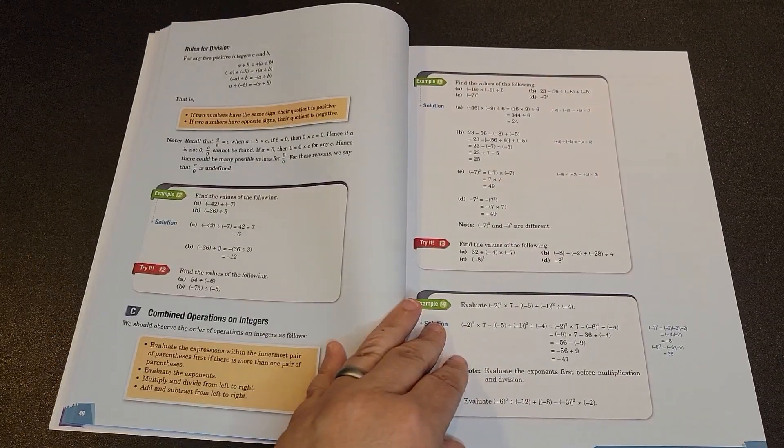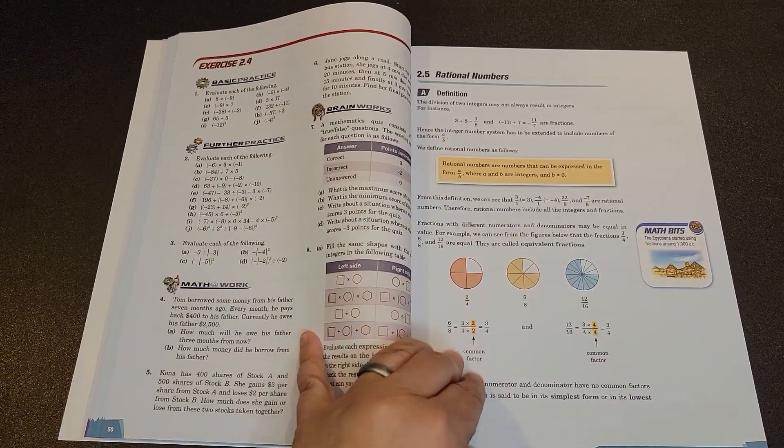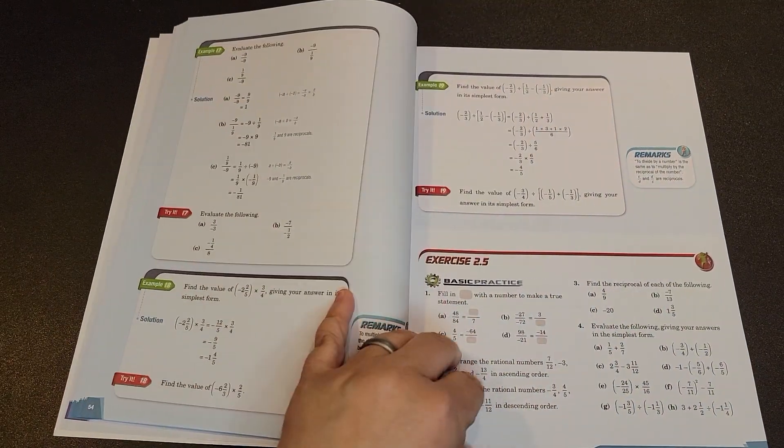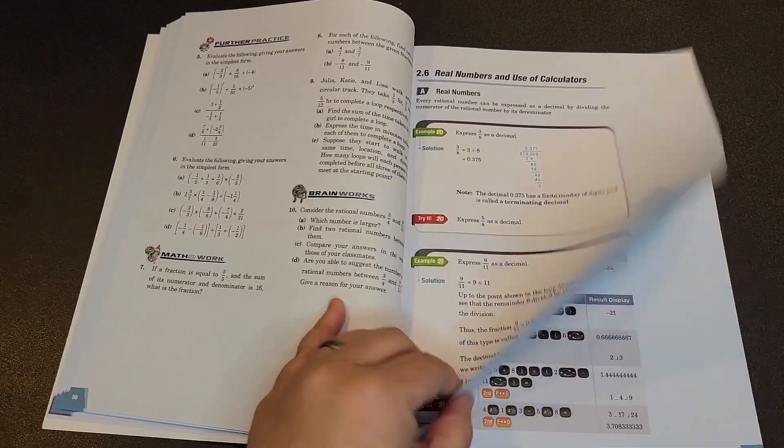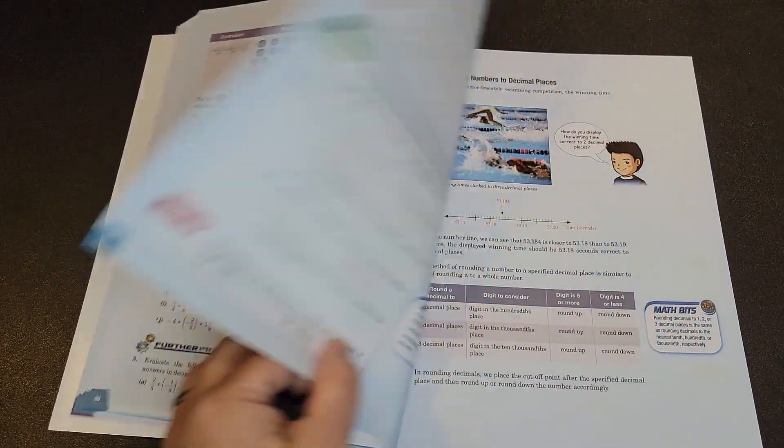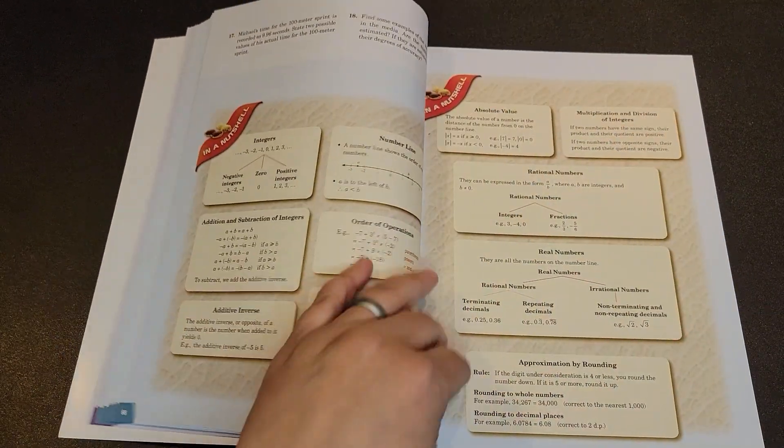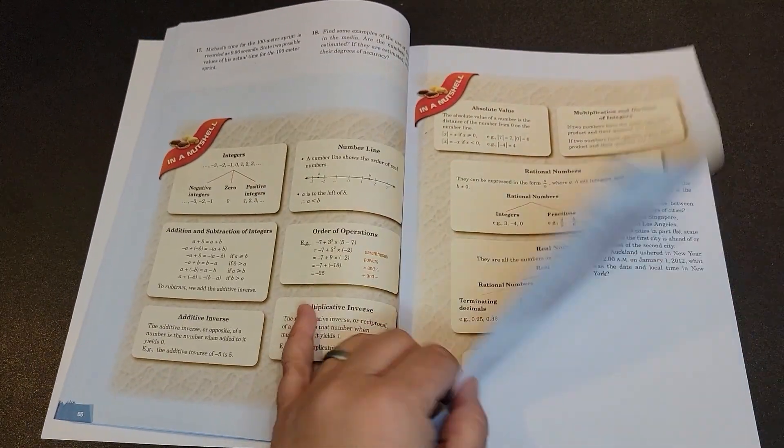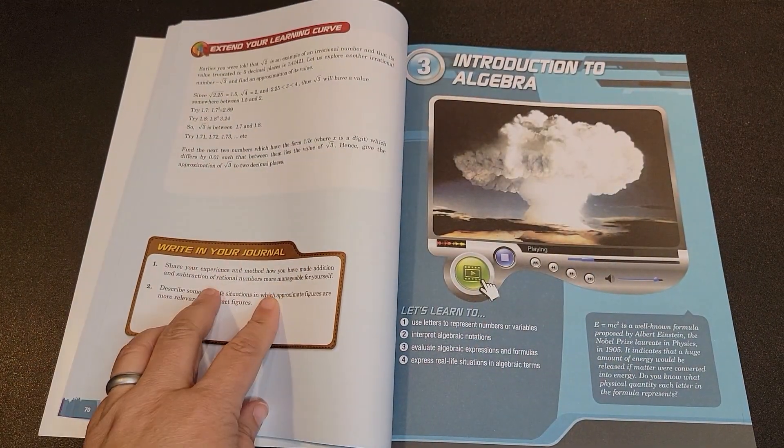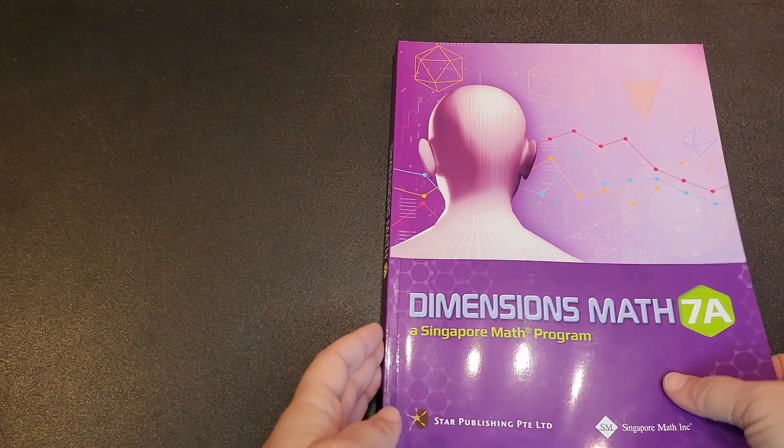And you even have the information for these review exercises, as well as you have your journaling at the end of each chapter, just like what you would have seen before. So here's your In a Nutshell, your review, and here's your journaling. So the textbook is basically the same as what you would have seen before.